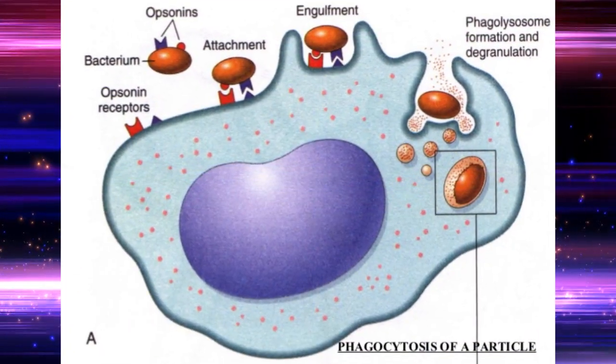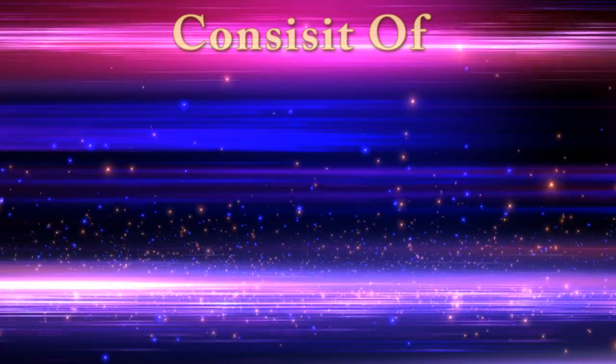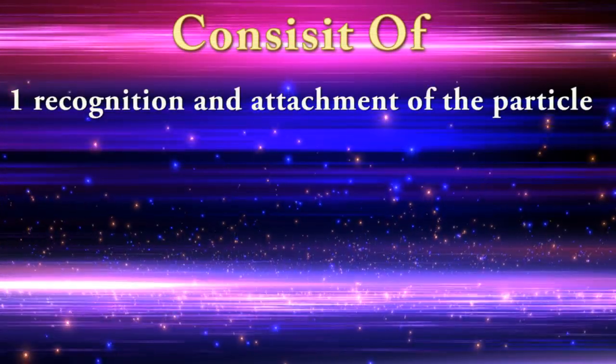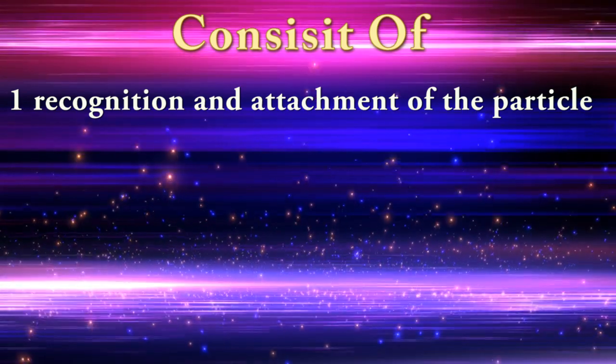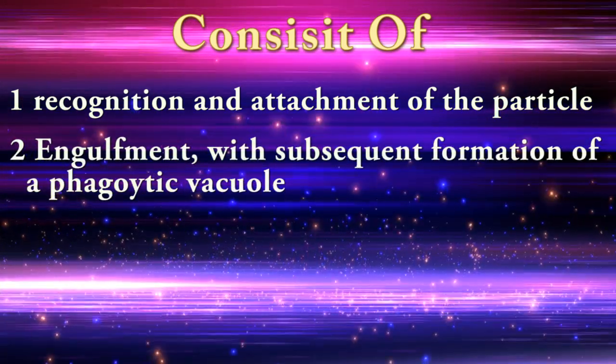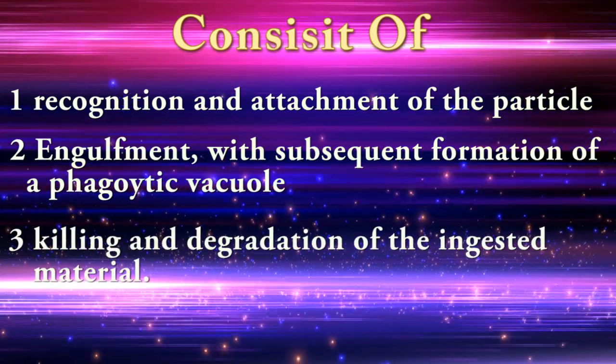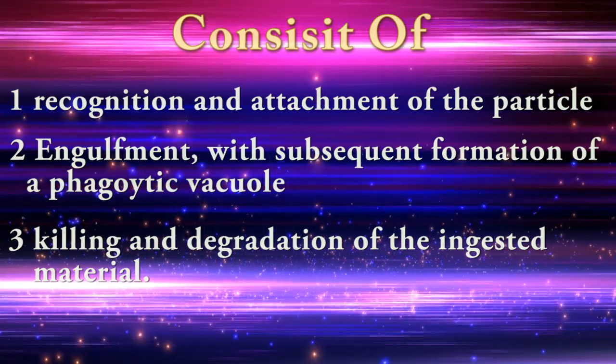Phagocytosis means engulfing and destroying solid materials. It consists of three steps: one, recognition and attachment of the particle to the ingesting leukocyte; two, engulfment with subsequent formation of a phagocytic vacuole; and three, killing and degradation of the ingested material.